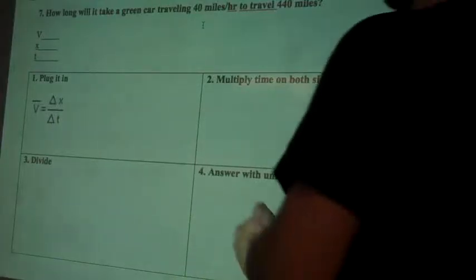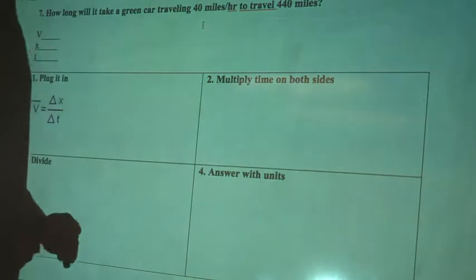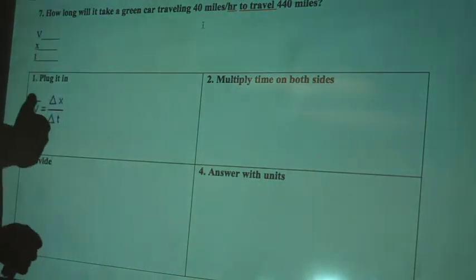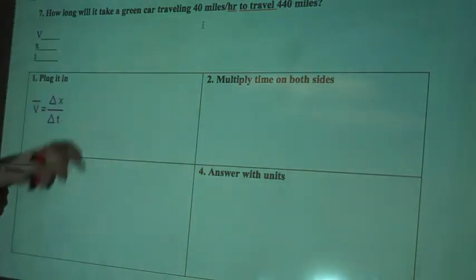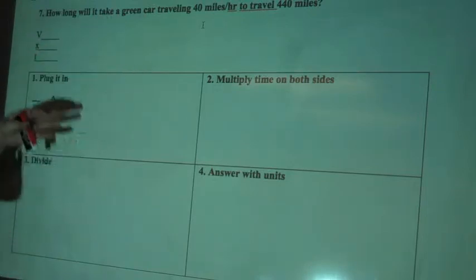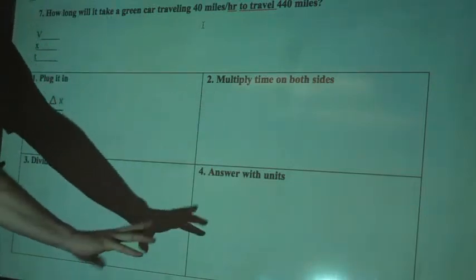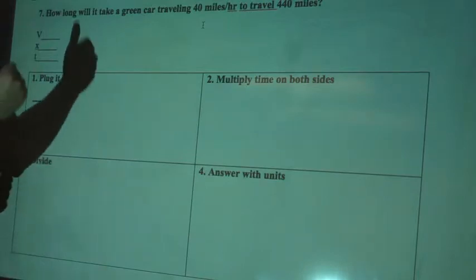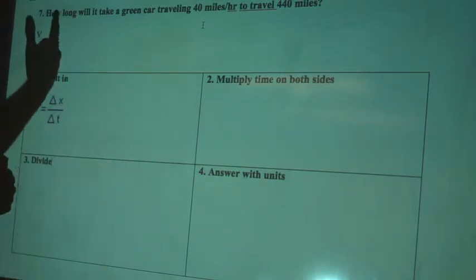The last type of problem we're going to look at are problems where we're solving for time. These are probably the toughest if we're starting with this equation because time is on the denominator. So there are a couple steps we're going to do to switch it around. There are more steps to these problems than the last ones where we're solving for distance or velocity.